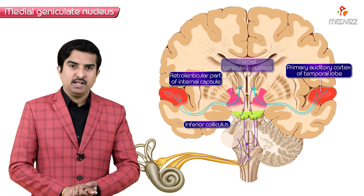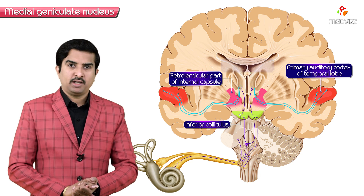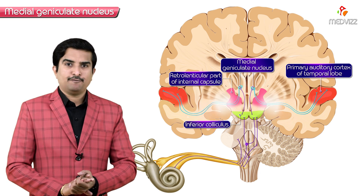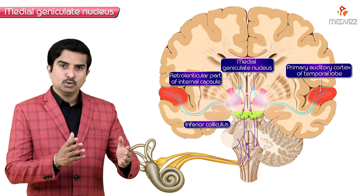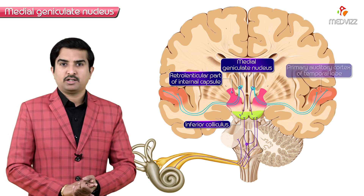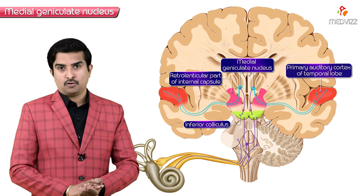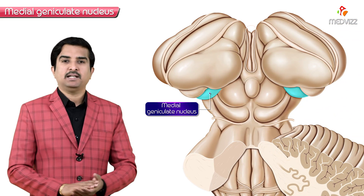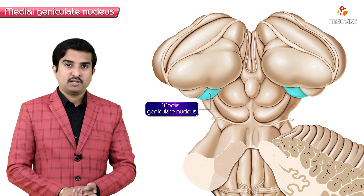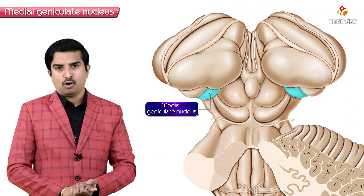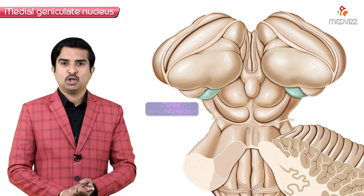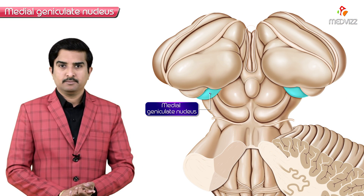This is the function of the Medial Geniculate Body in relaying auditory information to the primary auditory cortex of the brain. With this, we have completed the important anatomical points regarding the Medial Geniculate Body.